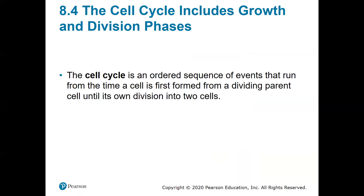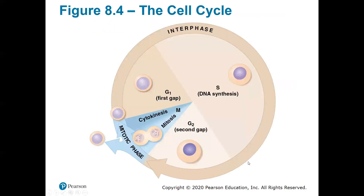The cell cycle is an ordered sequence of events that runs from the time a cell is first formed from a dividing parent cell to its own division into two daughter cells. A new cell has been created and will enter into what we call interphase. A cell will spend most of its life in interphase — the only other part that's not interphase is mitosis, the mitotic phase.